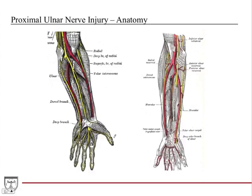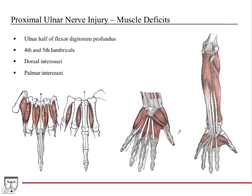Now for a proximal ulnar nerve injury. The big difference here is the lesion is not at the wrist but more proximal, affecting forearm innervation. The ulnar nerve travels through the more medial aspect of the forearm, so the injury is affecting it up here, not down at the wrist. The muscle deficits include the ulnar half of flexor digitorum profundus. Splitting the FDP in half, the medial half is ulnar nerve and the lateral half is median nerve. Losing the ulnar half affects digits four and five, while digits two and three remain okay.